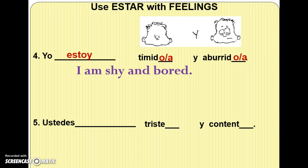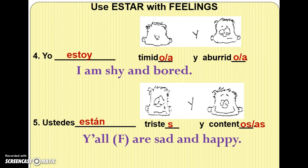Number five: for ustedes, the correct form of estar is están with an accent over the A. For triste, remember this is one of the exceptions — all you do is add an S to make tristes. And then y contentos or contentas — either works, though contentos is used more often. The sentence means: you all, formal, are sad and happy.